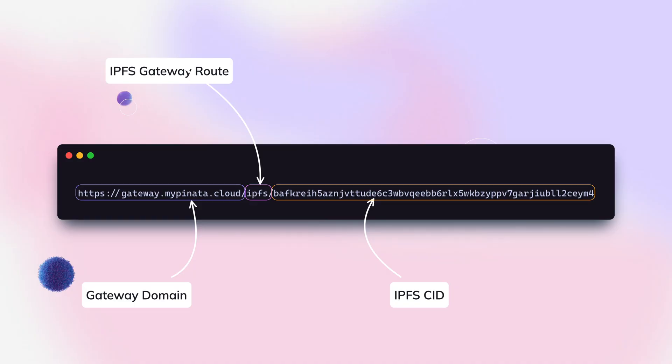The other kind of IPFS link you can make is a gateway link. This is not as good a method as the protocol one, but it can work in a pinch. Basically, you put in a gateway followed by the CID. The benefit is that they work right away — you can copy a gateway link, put it in your browser, and look at the content immediately. But the downside is that it provides a crutch for marketplaces trying to fetch that data. If that gateway fails, the data is not immediately accessible, and most marketplaces won't know exactly what to do with it unless they have the right tools.